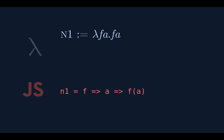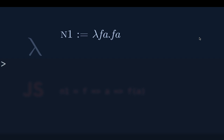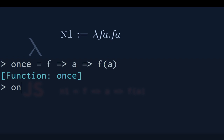One is going to take a function and an argument and apply the function to the argument one time — it's going to call the function once. So 'once' takes a function and argument and applies the function a single time. What is once of identity of two? Two — that makes sense. What about once of not?